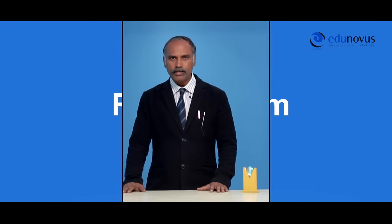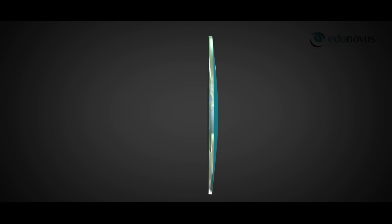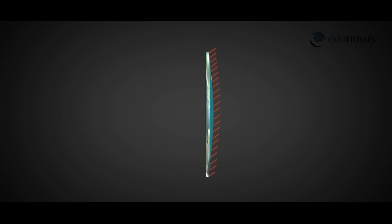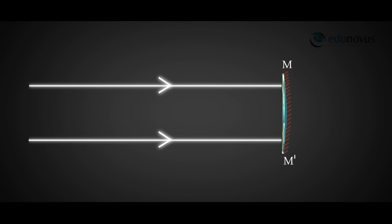Let us know the terminology associated with the concave mirror using a ray diagram. Consider a concave mirror — this is the reflecting surface. As you turn around the mirror, you can see the non-reflecting surface. In the side view, we denote the non-reflecting surface with lines drawn on it. The curved line mm', the diameter of the circular rim of the mirror, is called the aperture — the part of the mirror through which light rays enter. The center of the spherical surface of the mirror is called the pole, denoted by P.